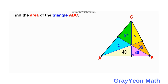First, we focus on the 40 square unit triangle and the 30 square unit triangle. They have a common height, so let's call this height H1. Since they share height H1 and their areas are 40 and 30 respectively, we can express them as 4K and 3K.